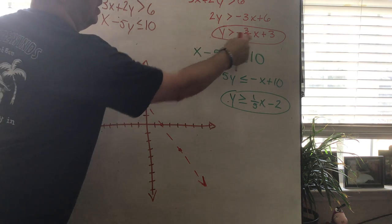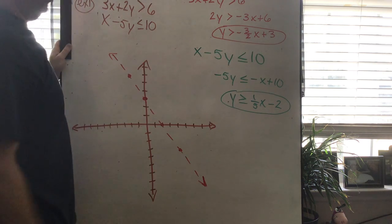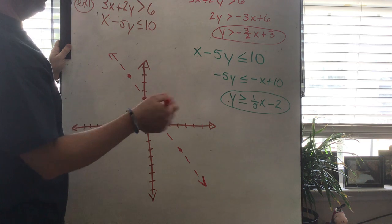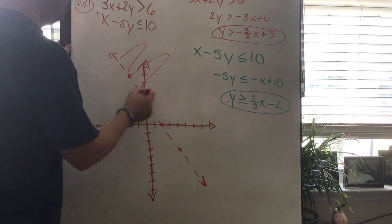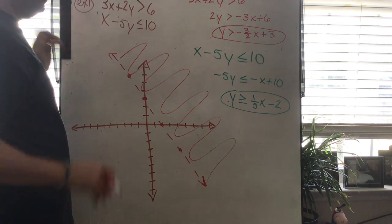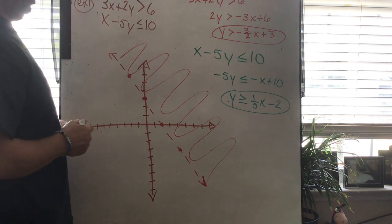If I plug in 0 for x and 0 for y, I want to know is 0 bigger than 0 plus 3. So is 0 bigger than 3? No, it's not. 0 is not bigger than 3. So I do not want to shade over there where 0,0 is. I'm going to shade the opposite side of the line. And there's my first one. Basic graphing a linear inequality 101, right?